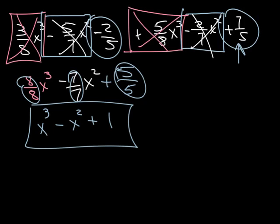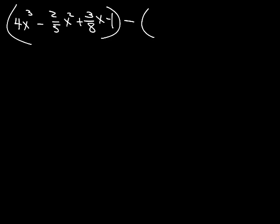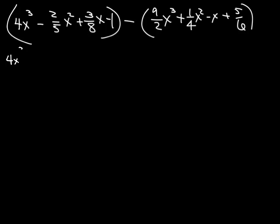Now, when you get to ones like number 32, we've got 4x cubed minus 2/5 x squared plus 3/8 x minus 1. And then, we're going to subtract 9/2 x cubed plus 1/4 minus x plus 5/6. So, what we're going to do in order to take the parentheses off, there's a minus sign here. So, we've got to be aware of that. So, we write the very first polynomial exactly as it's written.